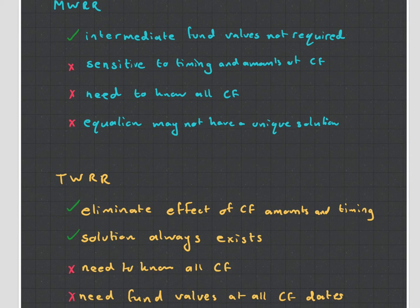But for now, you just need to know the following pros and cons. With regards to the money-weighted rate of return, the big advantage is that you don't need to know the fund values at each end of each year. That's very useful because it is sometimes difficult to calculate those fund values. In the exam, you will be given those values, so don't worry about that. The disadvantages, as we've mentioned, it's very sensitive to the timing and the amount of the cash flow. You need to know all the cash flows, and the equation may not have a unique solution because we used linear interpolation.